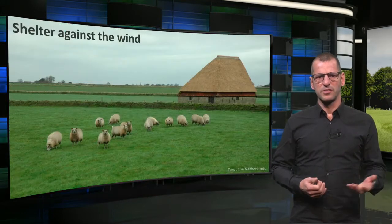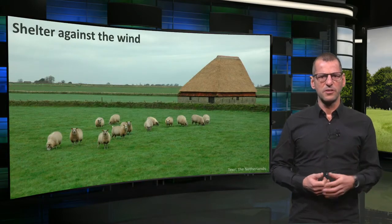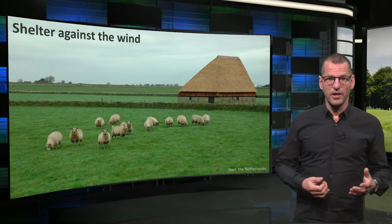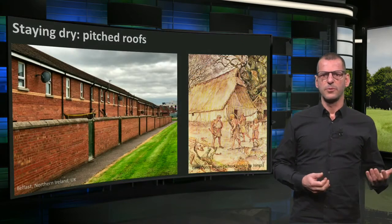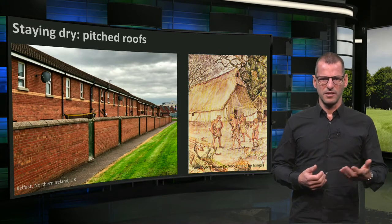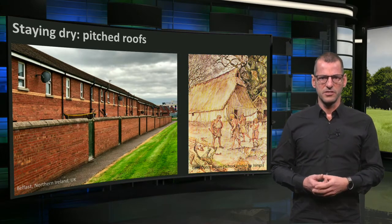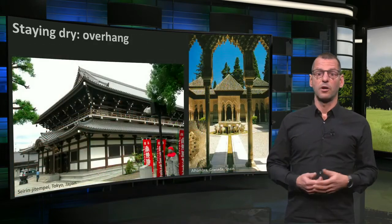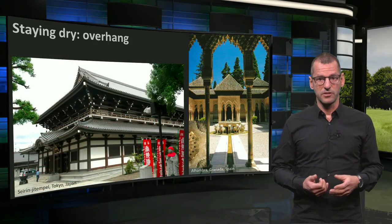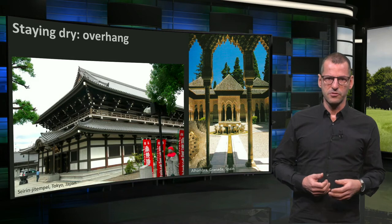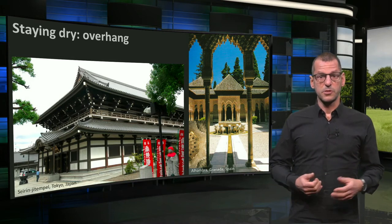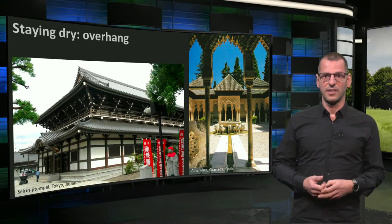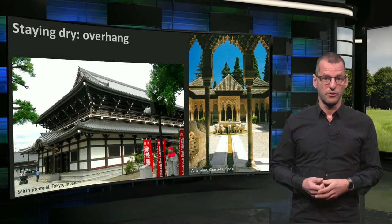In windy areas, buildings often responded to predominant wind directions, as you can see here. And in rainy and snowy regions, roofs had to be constructed so that homes didn't leak and water could run off easily. Overhangs were often created to provide shelter from rain and snow, but also to protect the constructions underneath. This was particularly important with timber structures.